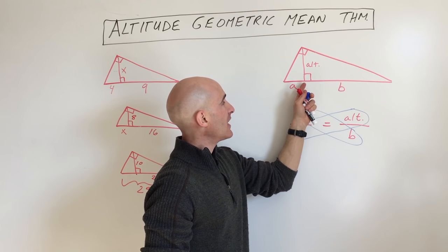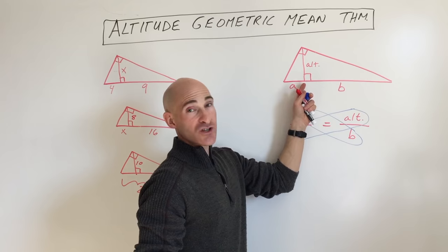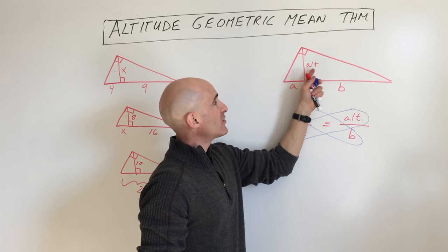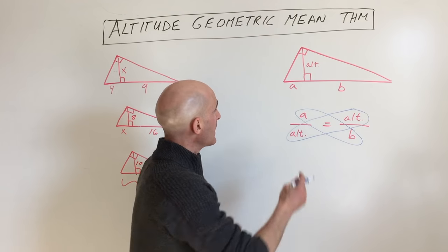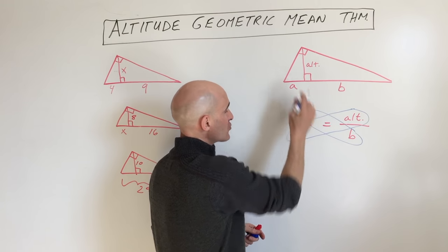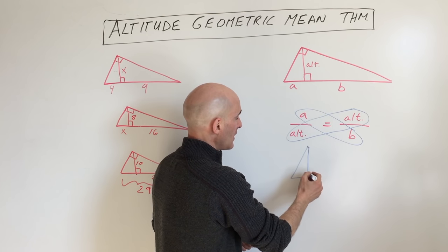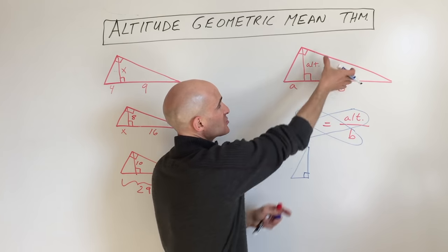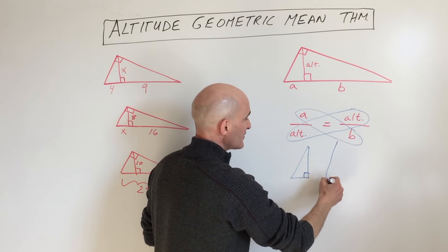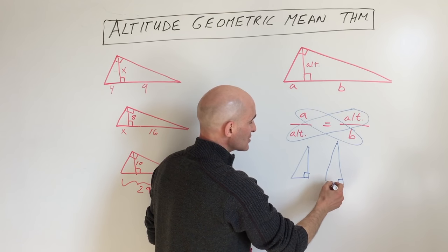You end up having a proportion that you can set up. This triangle and this triangle are the triangles we're going to compare. I'll just show you real quick. If you take this triangle and rotate it, and you take this triangle and rotate it, so you have them in the same orientation, same direction.